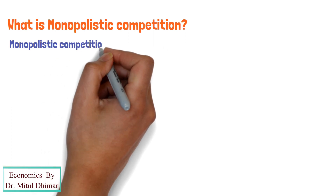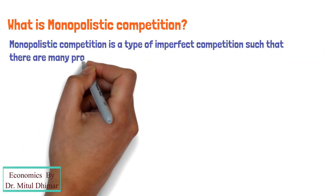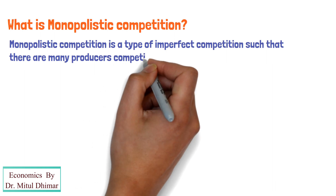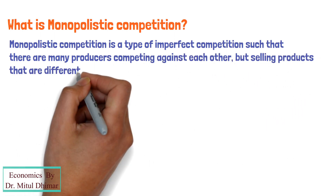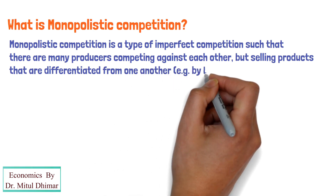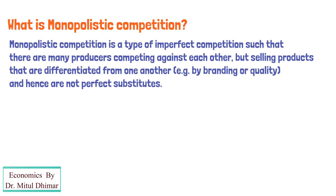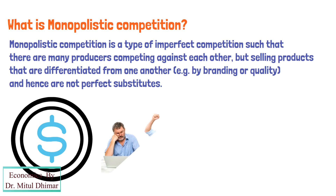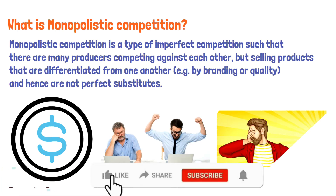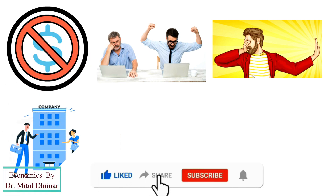Monopolistic competition is a type of imperfect competition such that there are many producers competing against each other, but selling products that are differentiated from one another, e.g. by branding or quality, and hence are not perfect substitutes. In monopolistic competition, a company takes the prices charged by its rivals as given and ignores the impact of its own prices on the prices of other companies.